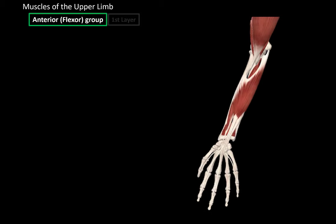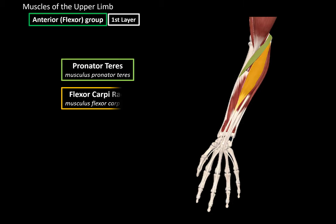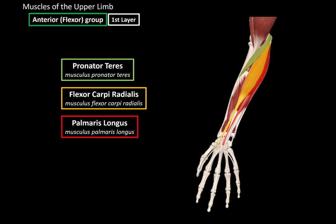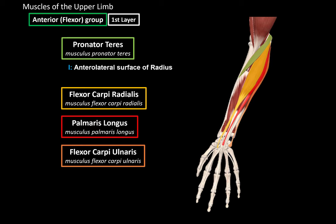The first layer, which is the most superficial, consists of the pronator teres, flexor carpi radialis, palmaris longus, and flexor carpi ulnaris. All of these muscles mainly originate from the medial epicondyle of the humerus, but they have different insertion points and therefore some slight differences in function. The pronator teres inserts at the anterolateral surface of the radius, and its function is pronation of the arm by pulling the radius medially, as well as helping with flexion of the lower arm.